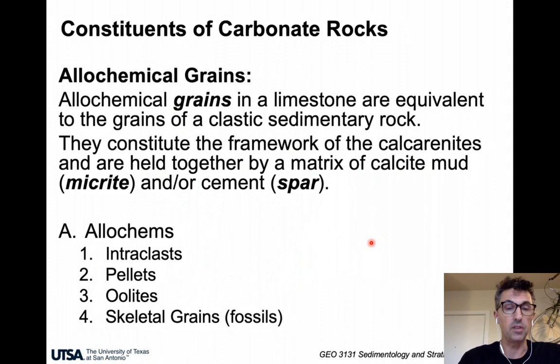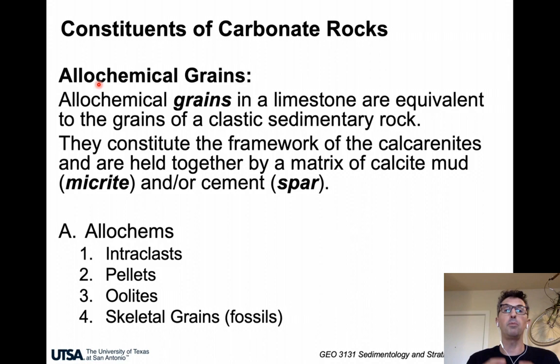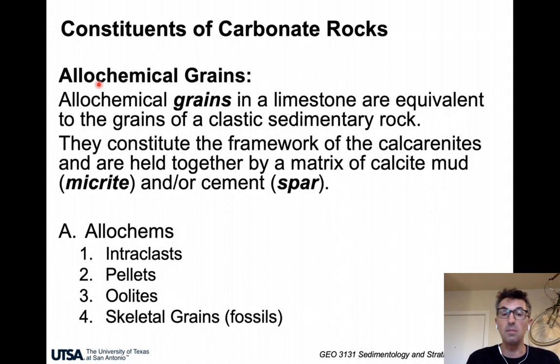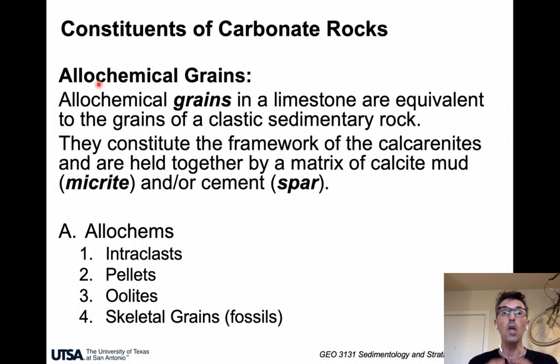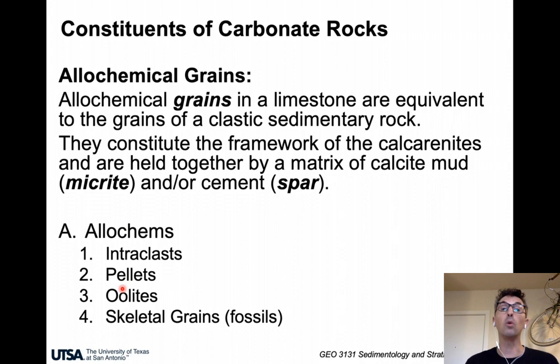In carbonate rocks, the terms are a bit different. For the grains, we refer to allochemical grains or allochems, which are the equivalent of grains in classic sedimentary rocks such as sand grains or clay grains. They make up the skeleton of the rock, and in between we can find either a matrix like a micrite and/or a cement called a spar in carbonate rocks. So allochems, micrite, and spar are terms dedicated to carbonate rocks. For those allochems, we need to differentiate their nature — they can be intraclasts, pellets, ooids, or skeletal grains, which are little pieces of fossils.